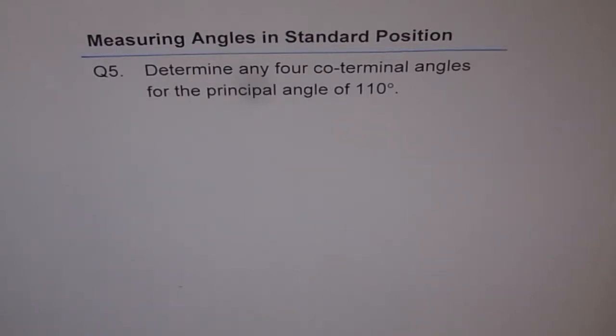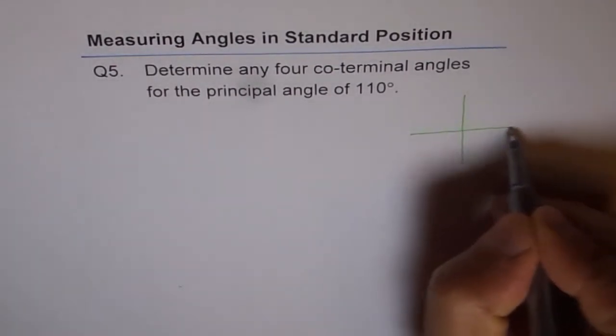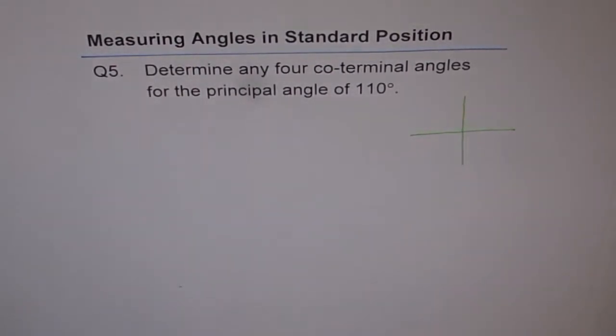I hope you remember what co-terminal angles are. Co-terminal angles are angles which have exactly the same initial arm position and the terminal arm position.